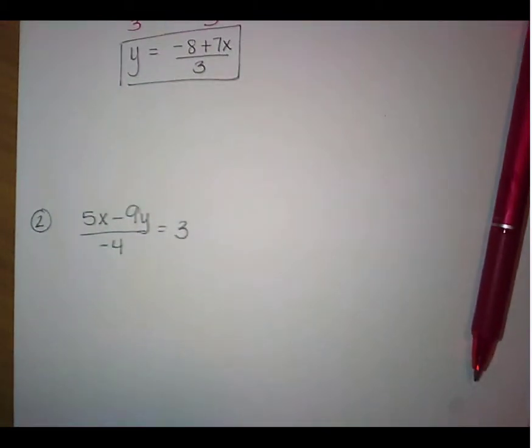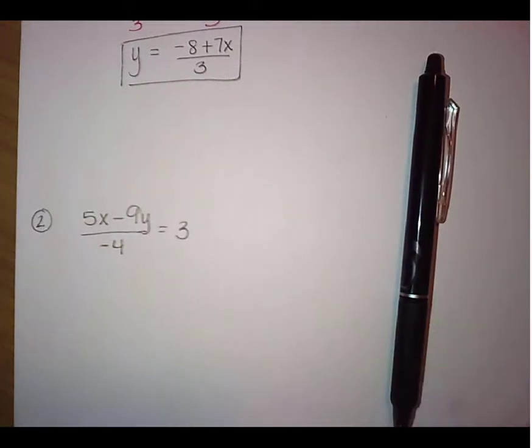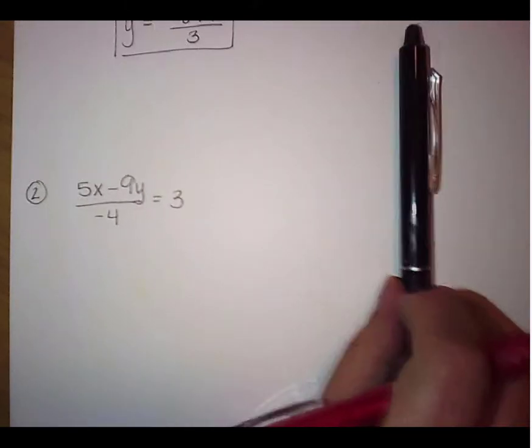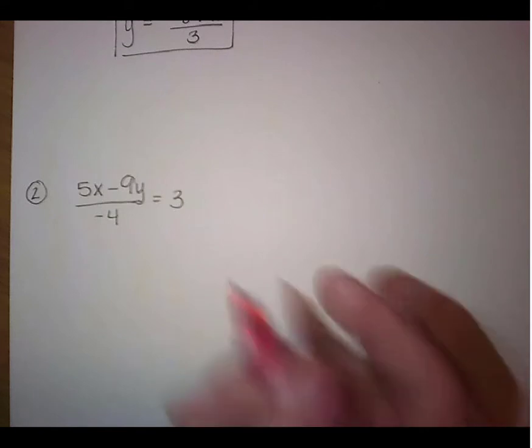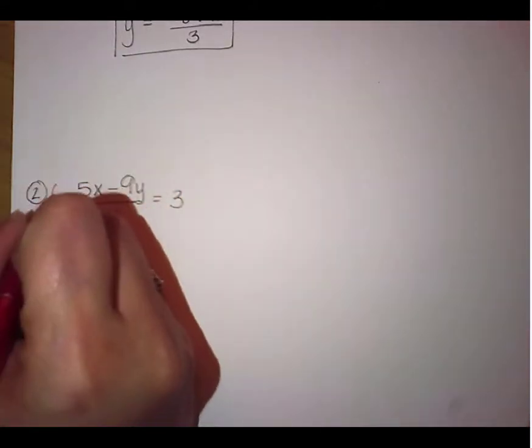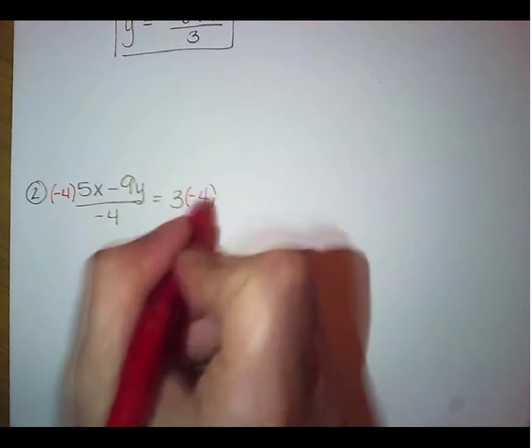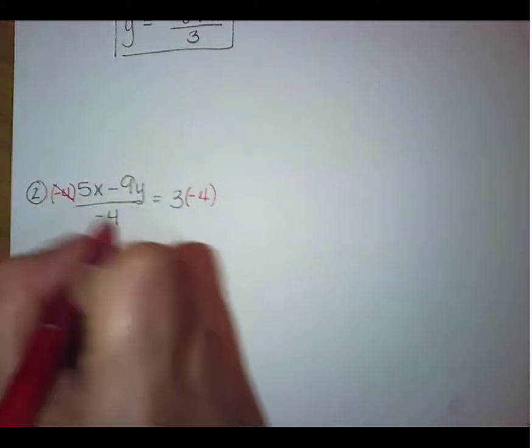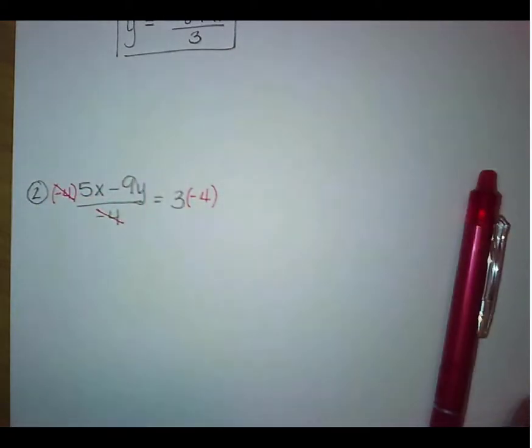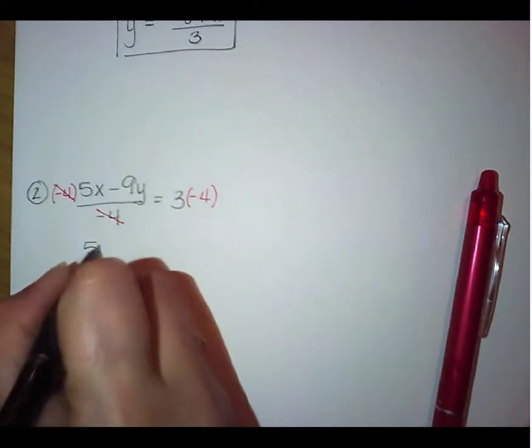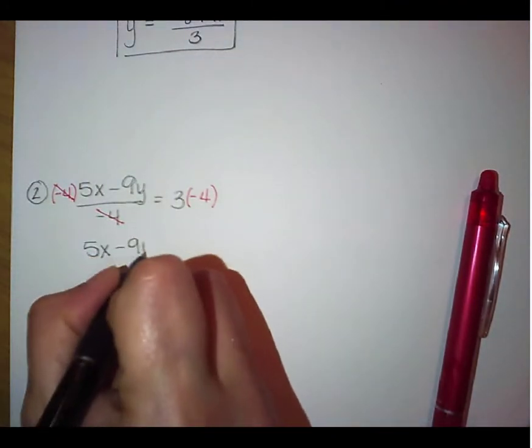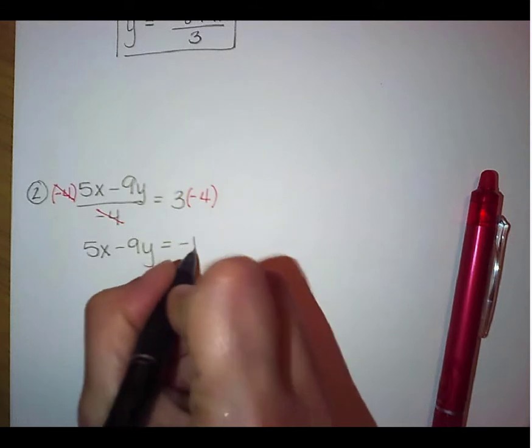Let's look at the next one. This is like that fraction problem we did in questions 2 and 3 on the previous video. So what we're going to do is start by multiplying by negative 4 on both sides. Over here on the left,